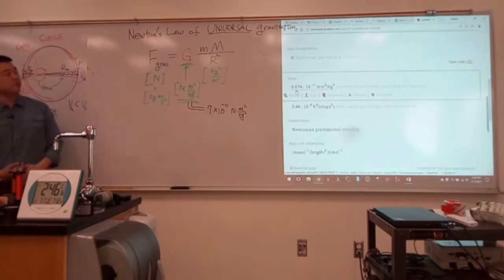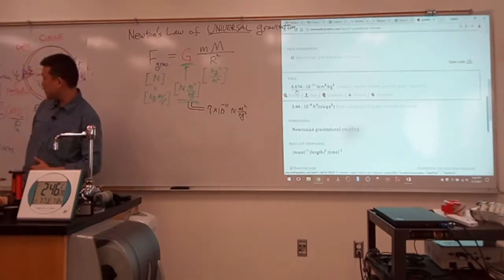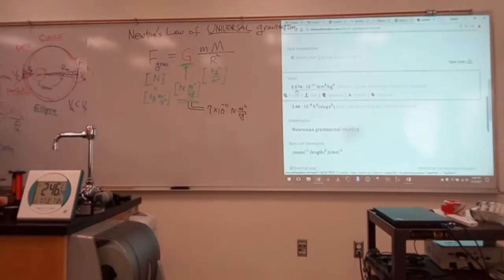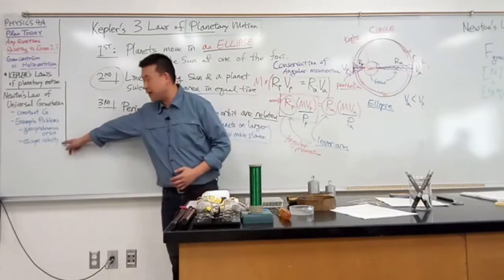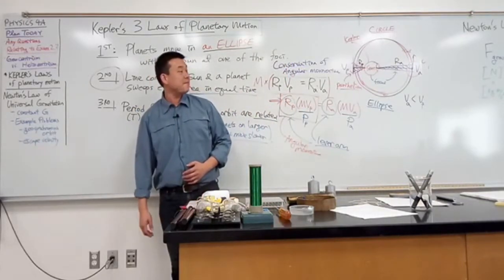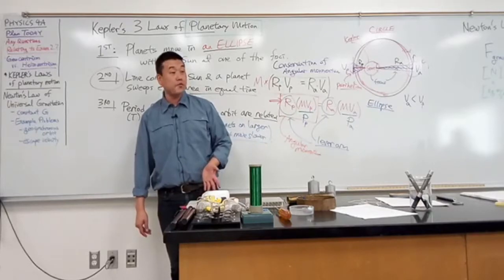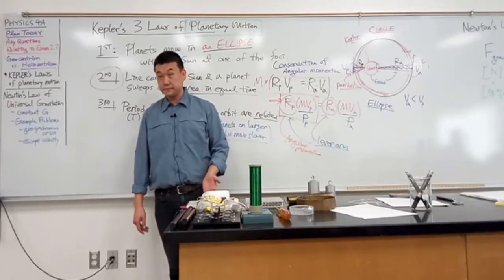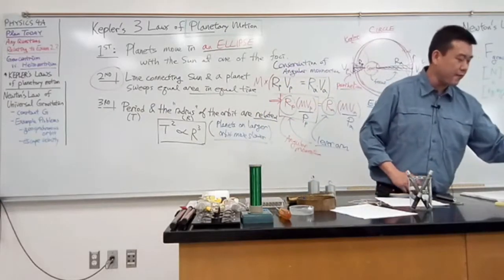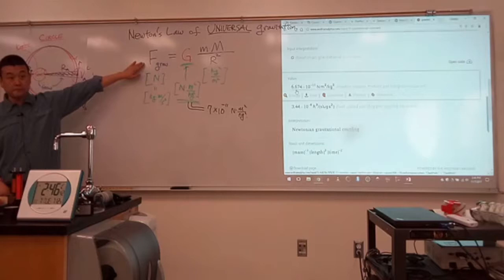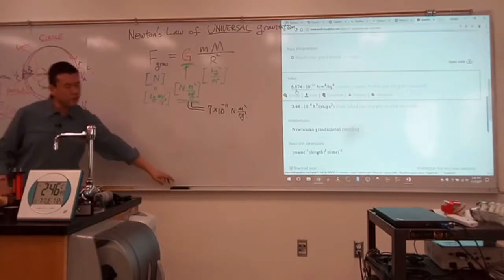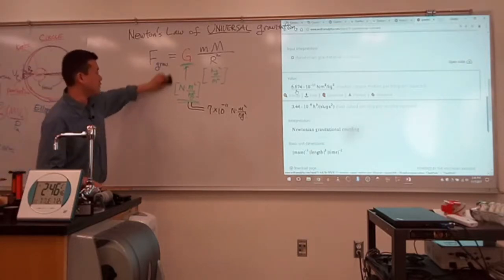So, this is Newton's law of universal gravitation. I guess we don't really have time to look at the example problems that I want you to. Oh, I think we actually have enough time for escape velocity. If I skip a step and give you the expression for gravitational potential energy. So, do you guys remember how to derive a potential energy? So, gravity is a conservative force, right? Yes? Do you remember how to derive a potential energy from a conservative force?